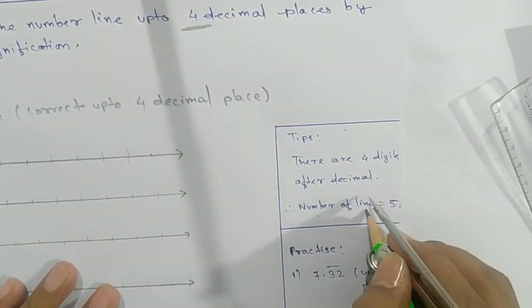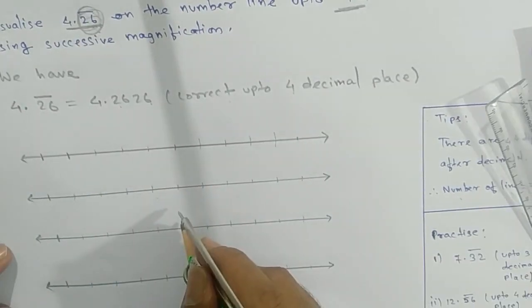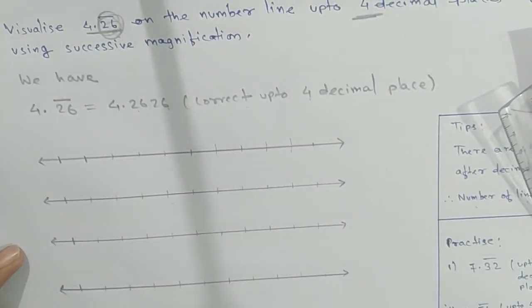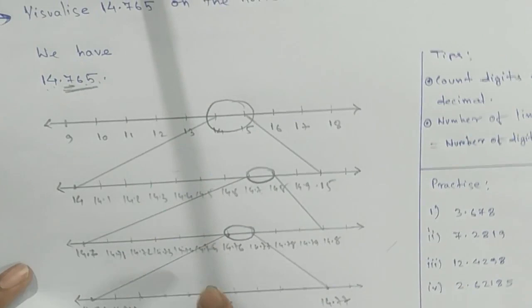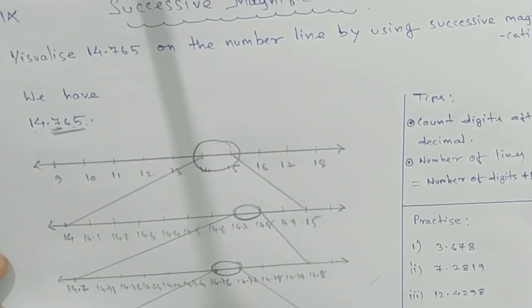Here we are taking five lines, and then you proceed the same way we have done this one. Same way, we'll get our answer. Hope you understood. Thank you.